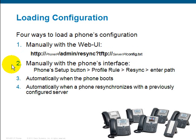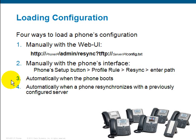The second way to load a configuration into a phone is to use the phone's interface itself. Press the phone setup button, navigate down to profile rule to resync, and then enter the path — for example, http://[server IP address or server name]/[path]. Another way you can load the phone's config is automatically when the phone boots. Under the phone's provisioning tab, there's a profile rule where you can put in a path and the phone will pull the configuration when it reboots.